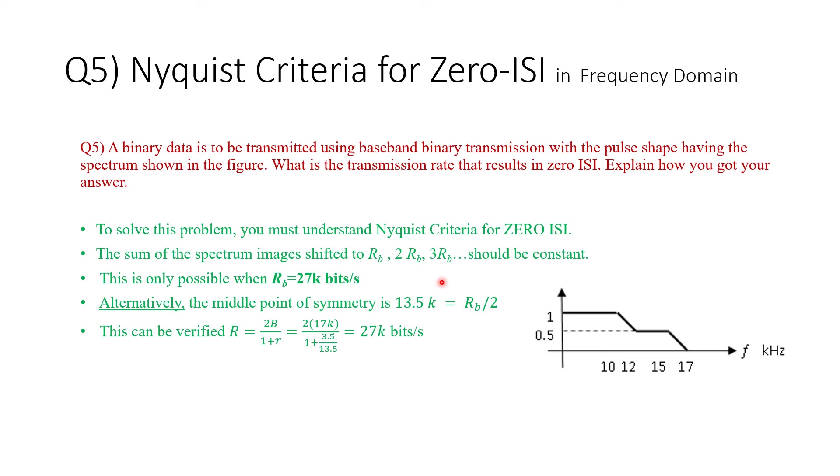I'm going to pause the video, or you can pause the video now, and your job is to find the transmission rate that will result in zero ISI. So you need to give me the number. You can also write your numbers in the chat section. You can pause the video and think about the answer.